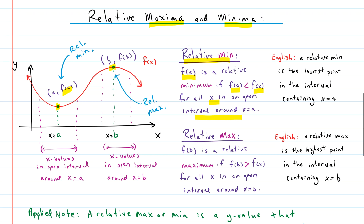If we take x equals a — which we can see right here — it's just an x value. Maybe it could be five, maybe it could be three; it's just some generic number we'll call a. So from this number we'll go left and we'll go right, and we have this area around it — kind of like a little neighborhood surrounding x equals a. If we shoot those up to the curve, we have this area on the curve that I just highlighted in pink.